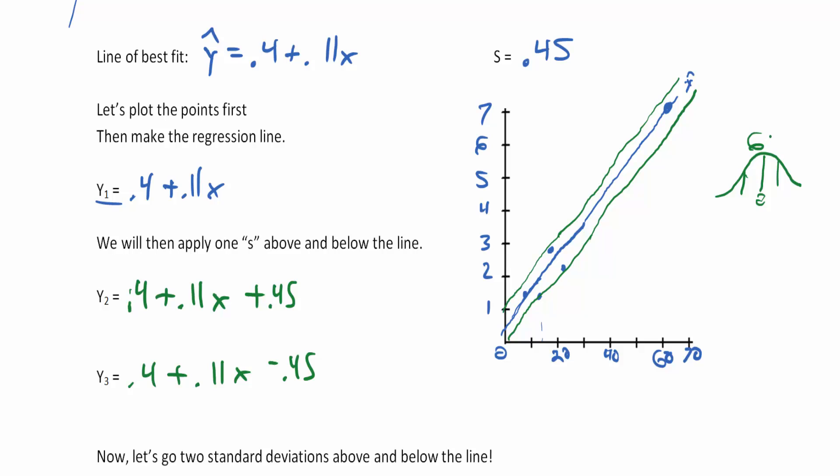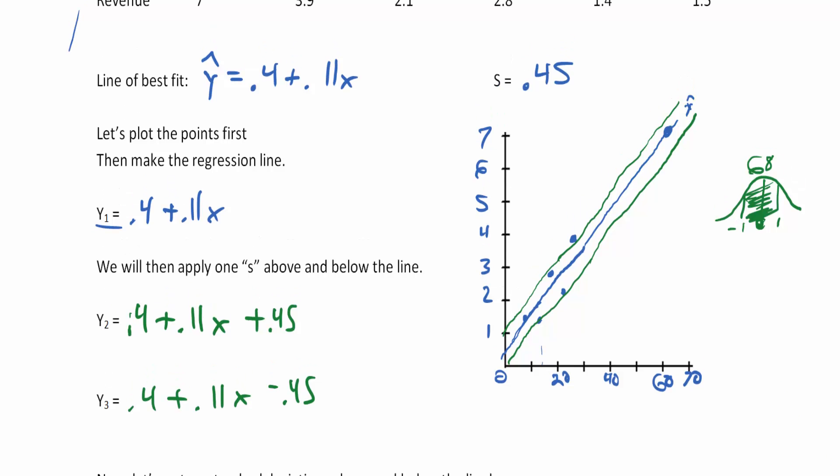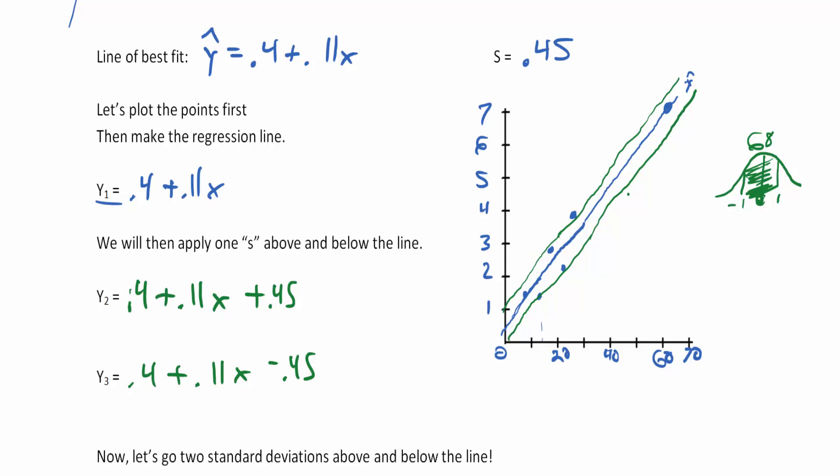Since we know that a normal curve between zero and one standard deviation is considered normal—the empirical rule—68% of the population is within one standard deviation above and below zero.